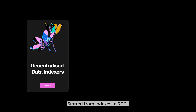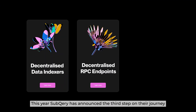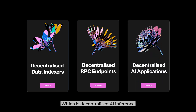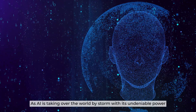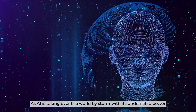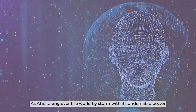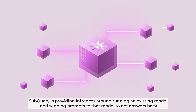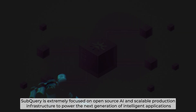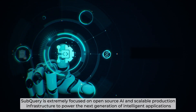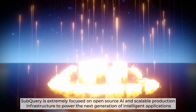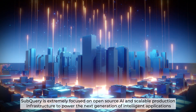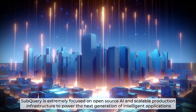Starting from indexers to RPCs, this year Subquery has announced the third step on their journey, which is decentralized AI inference. As AI is taking over the world by storm with its undeniable power, Subquery is providing inferences around running an existing model and sending prompts to that model to get answers back. Subquery is extremely focused on open source AI and scalable production infrastructure to power the next generation of intelligence applications.